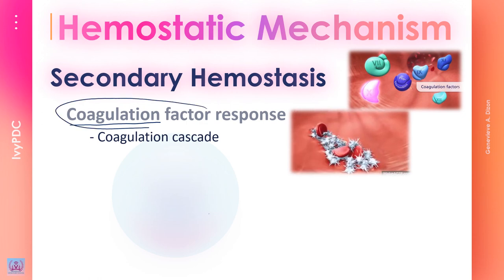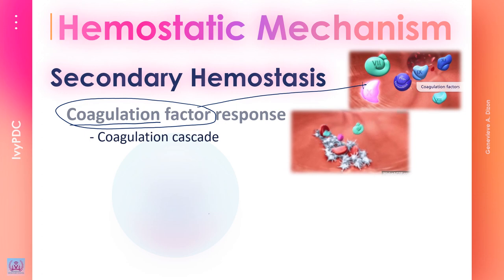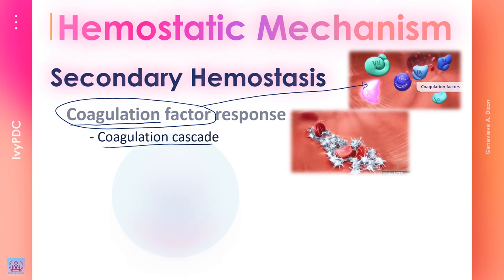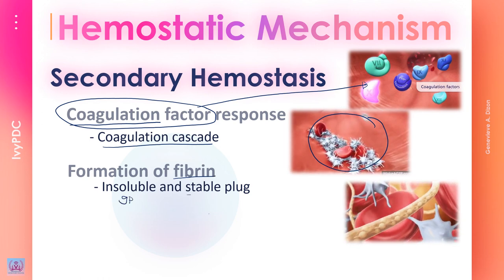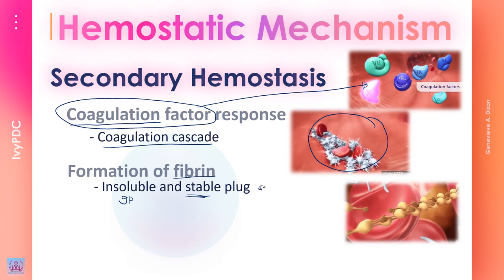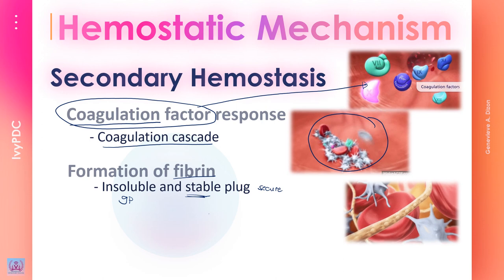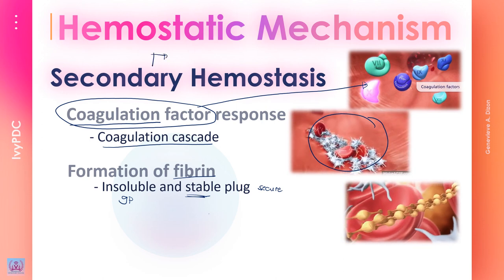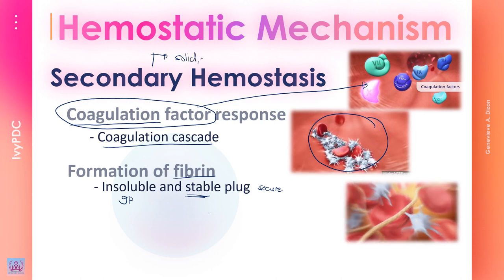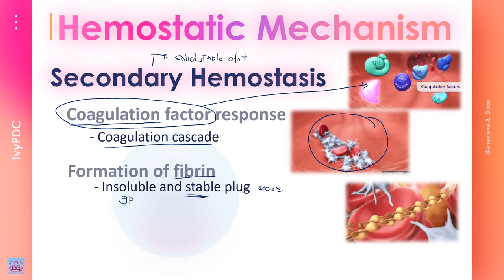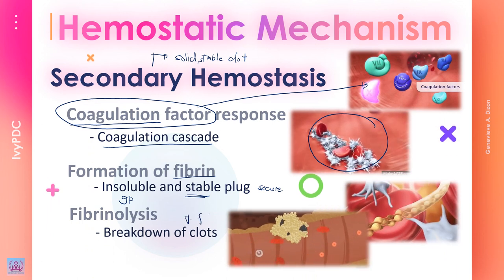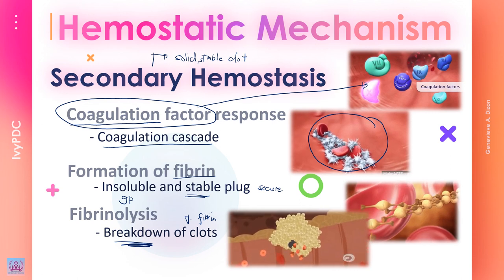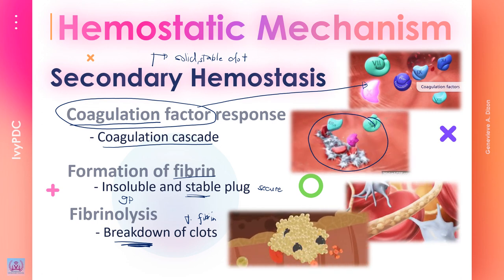The next step after primary hemostasis is secondary hemostasis, also called coagulation, due to the involvement of molecules called coagulation factors. These coagulation factors are activated in sequence in what is called the coagulation cascade, which amplifies the clotting effect of the platelet plug through the formation of fibrin. Fibrin is an insoluble glycoprotein that is much more stable than the platelet plug because it is securely attached to the blood vessel wall, resulting in a solid and stable clot. The last phase is fibrinolysis, where the temporary fibrin clots are dissolved as the blood vessel heals, in order to restore normal blood flow.